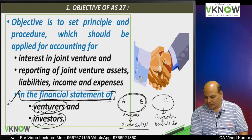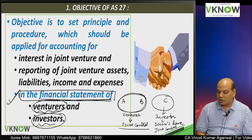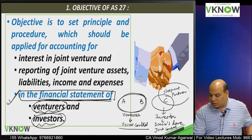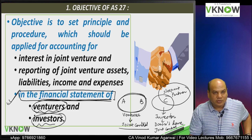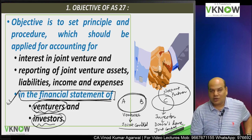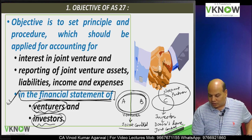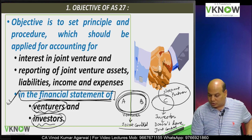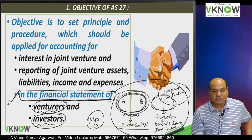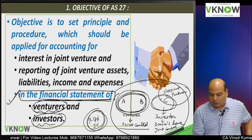The investor does not have joint control. In your partnership chapter we used to call him a sleeping partner — he is like that. The standard does not use the term sleeping partner, but an investor is similar. He will contribute capital, enjoy profit, and receive dividend, but he will not participate in the day-to-day running of the business. That activity is taken care of by A and B, who are called venturers. C is called the investor. Suppose they form a company called X Limited — that company is called the joint venture. This standard is not applicable to the joint venture entity itself; it is applicable to the venturer and investor.